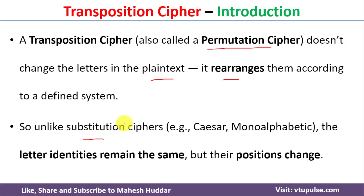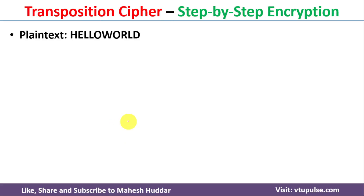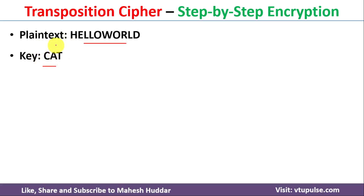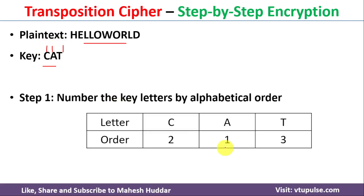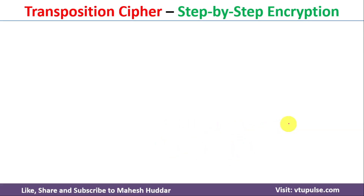Now we will take one simple example to understand the transposition cipher. The plain text is 'hello world' and the key is 'cat'. In the first step, we need to give a number to the key letters in alphabetical order. In alphabetical order, A will come first, then C, then T.